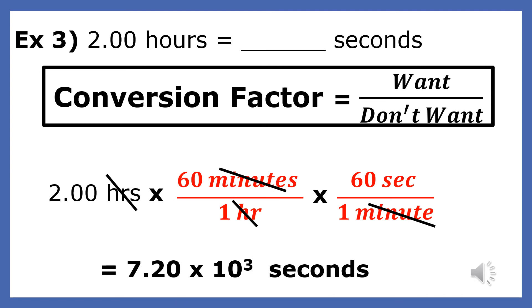The answer is 7,200, so the only way to give the number three significant digits is to put it in scientific notation.